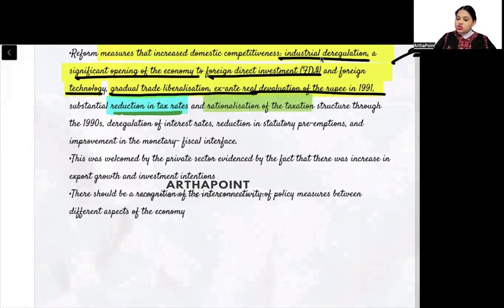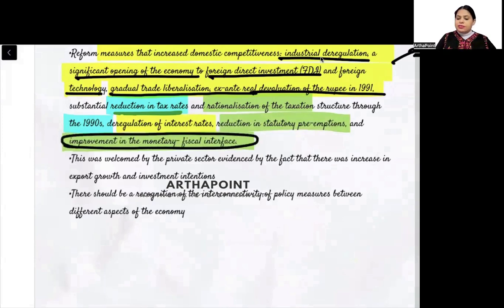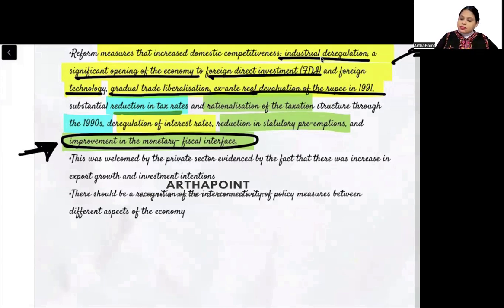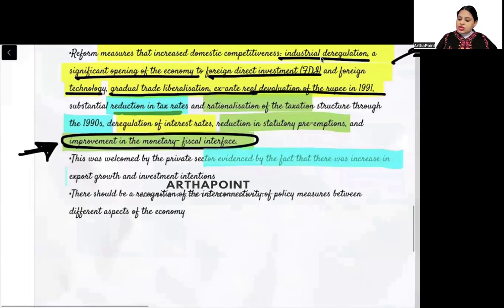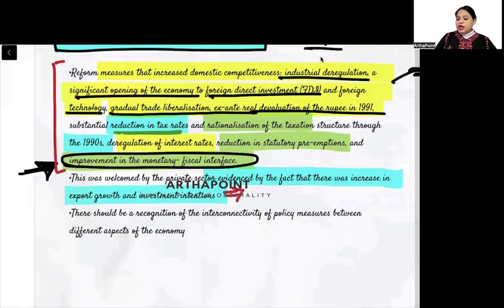Sixth, deregulation of interest rates — regulations on interest rate movements were removed. Seventh, reduction in statutory preemptions and improvement in monetary-fiscal interface. Previously, not much freedom was given to monetary policy; it was more of a government-oriented, fiscal policy-driven system. Later, RBI was also given a role, and monetary policies were allowed to be better utilized. This was welcomed by the private sector, evidenced by increases in export growth and investment.